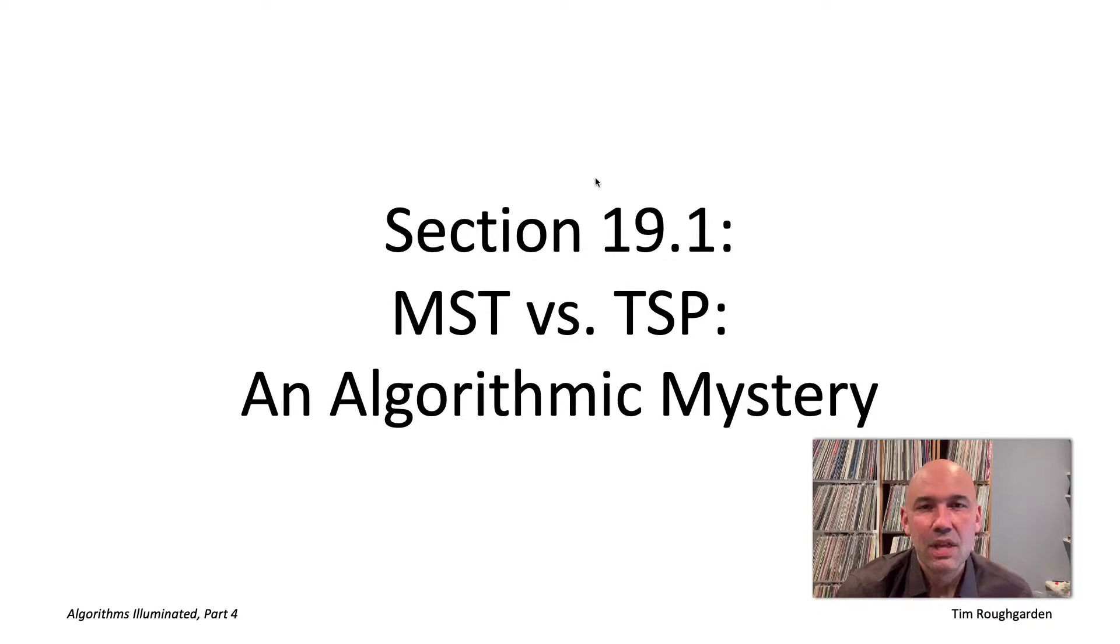Hi everyone and welcome to this video that accompanies section 19.1 of the book Algorithms Illuminated Part 4. It's a section about an algorithmic mystery between two similar seeming but computationally very different problems, the minimum spanning tree problem and the traveling salesman problem. This video is the first one from chapter 19 about what is NP hardness.